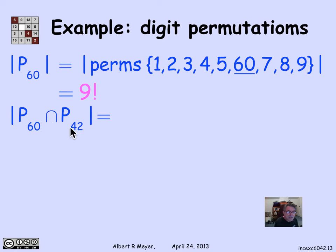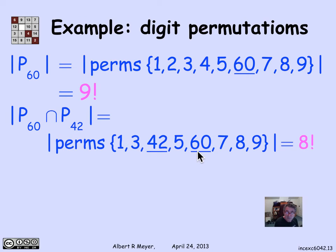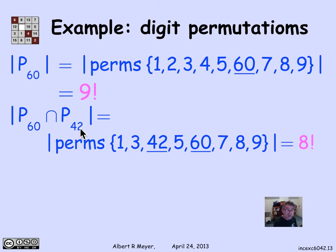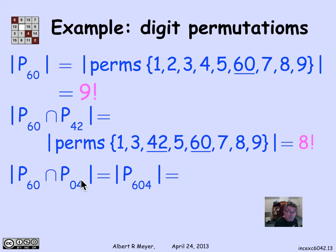What about P60 intersection P42? Think of this as permuting two objects — '6,0' and '4,2' — plus the remaining digits 1, 3, 5, 7, 8, 9. That's eight items total, so there are 8 factorial permutations. For P60 intersection P04: if a sequence has both a 6-0 and a 0-4, it actually contains the three-digit pattern 6-0-4. So P60 ∩ P04 is the set of sequences with pattern 6-0-4, and counting gives 8 objects (the pattern plus 7 remaining digits), again 8 factorial.